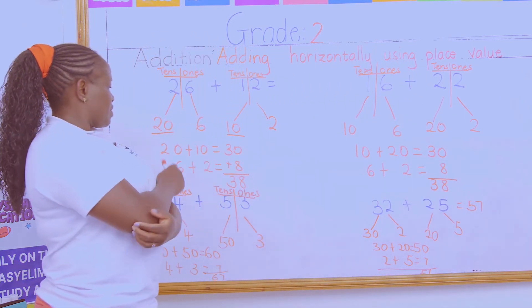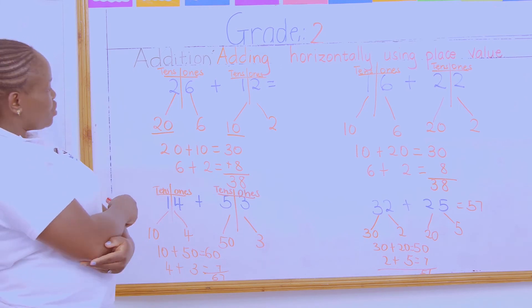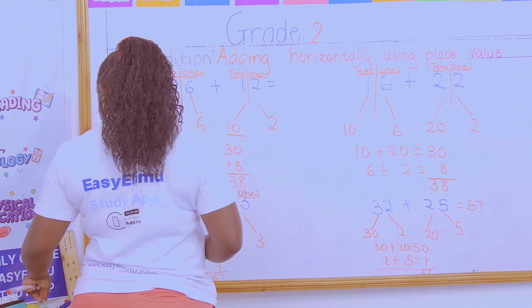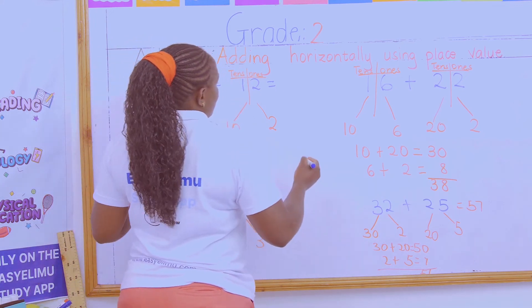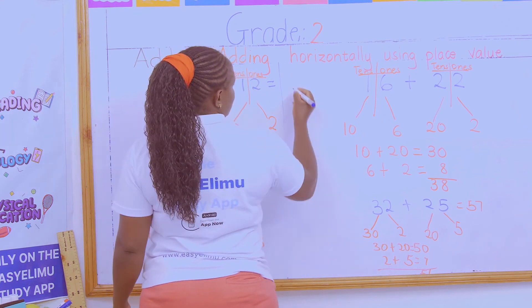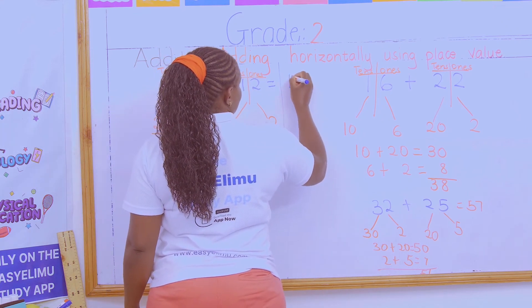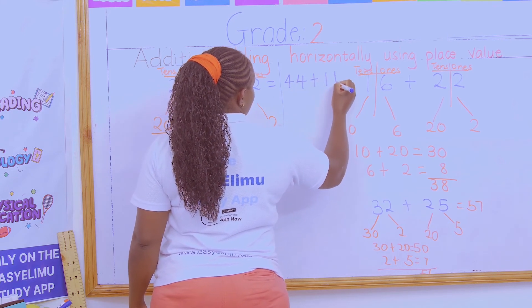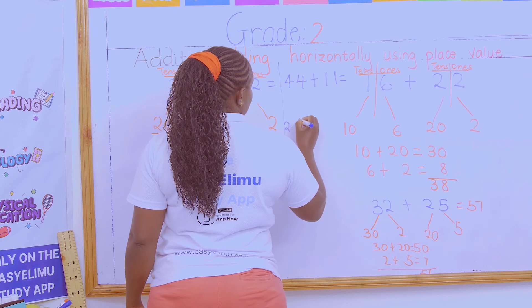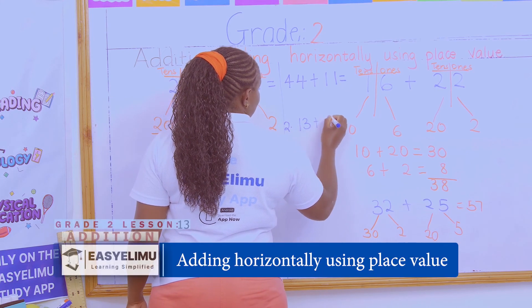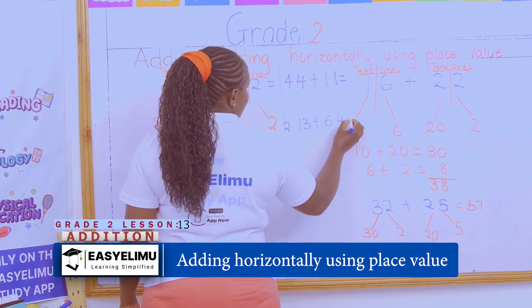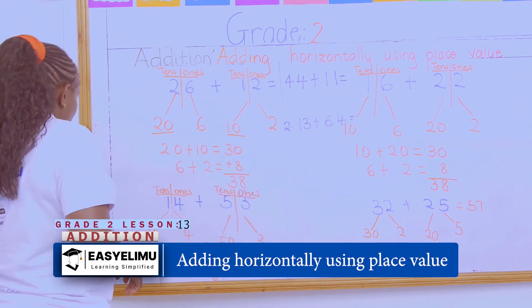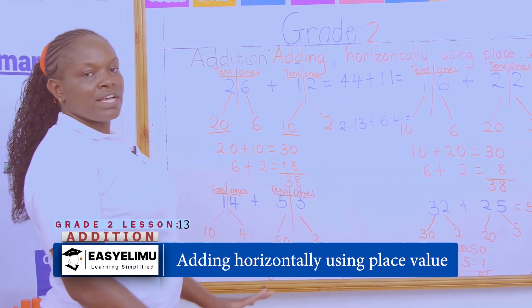Any questions? Is that understood? Good. I want some people to try this at home. Question one: 44 plus 11. Question two: 13 plus 64. Only two questions for your assignment, so we can see who understood.